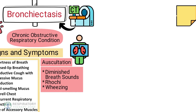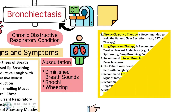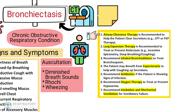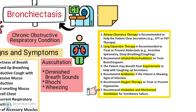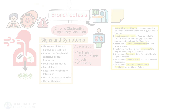Auscultation may reveal diminished breath sounds, ronchi, or wheezing. A chest X-ray is recommended, but a CT scan is required for the diagnosis of bronchiectasis. Airway clearance therapy is recommended to help the patient clear secretions, such as chest physiotherapy or PEP therapy. Lung expansion therapy is recommended to treat or prevent atelectasis, such as incentive spirometry or deep breathing and coughing. Inhaled bronchodilators can treat bronchospasm, expectorants help with coughing up secretions, and antibiotics are recommended if the patient shows signs of infection. Recommend oxygen therapy to treat or prevent hypoxemia, and intubation and mechanical ventilation for ventilatory failure.